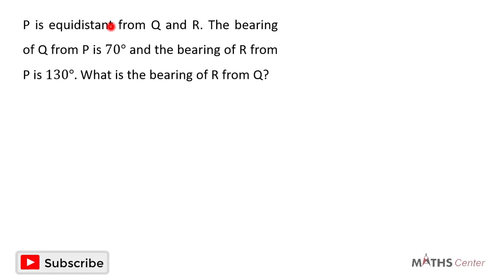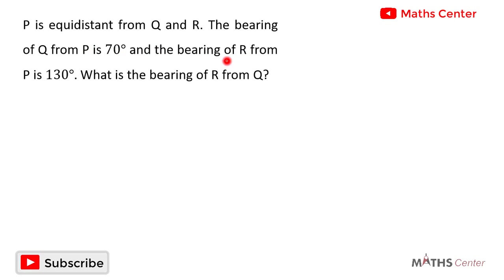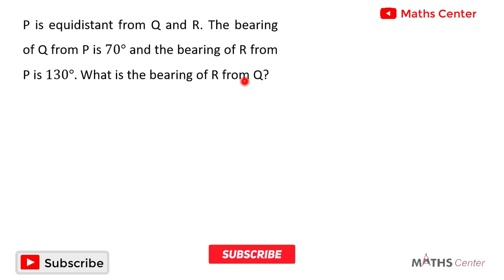P is equidistant from KL and R. The bearing of KL from P is 70 degrees and the bearing of R from P is 130 degrees. What is the bearing of R from KL?